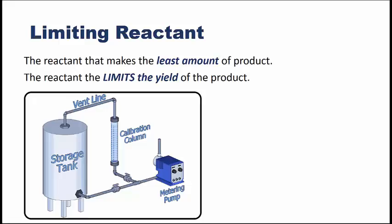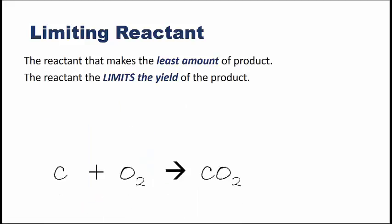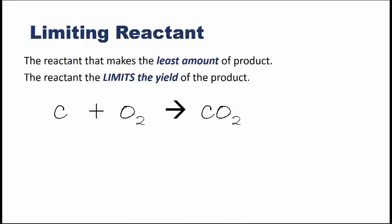Let's take a look at a simple reaction involving a limiting reactant. Take the reaction of carbon and oxygen gas to form carbon dioxide. Here we'll see that we have a 1 to 1 ratio of reactants. So we have 1 mole of carbon reacting with 1 mole of oxygen gas to form 1 mole of carbon dioxide as a product.